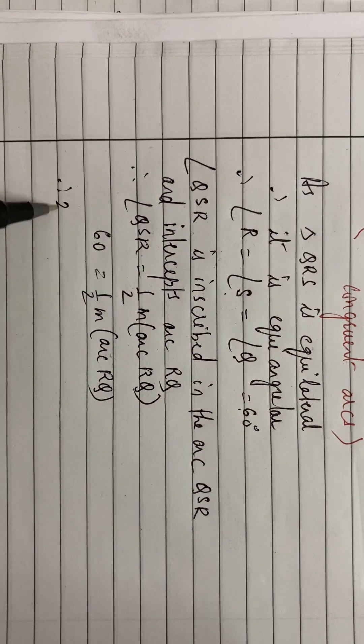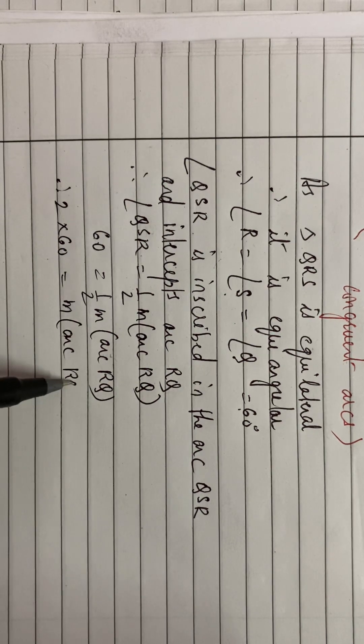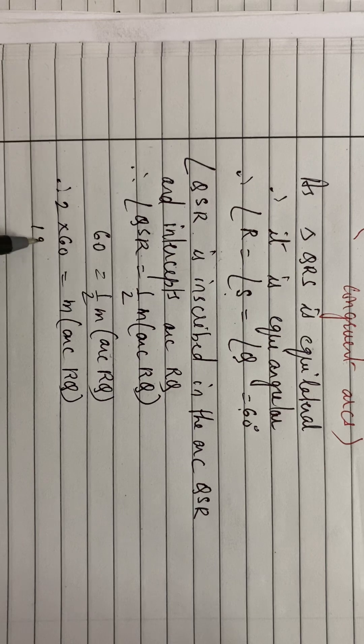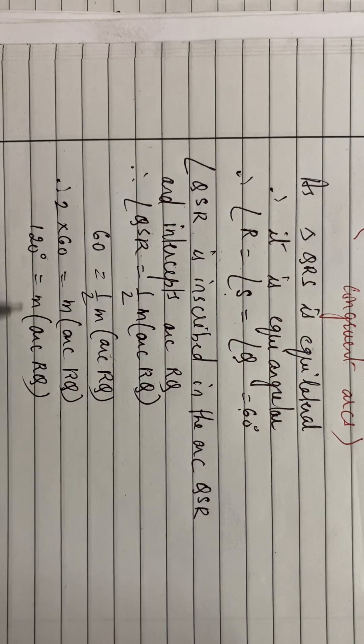So 2 into 60 is measure arc RQ. So 120 degrees is your measure of arc RQ. Fine?